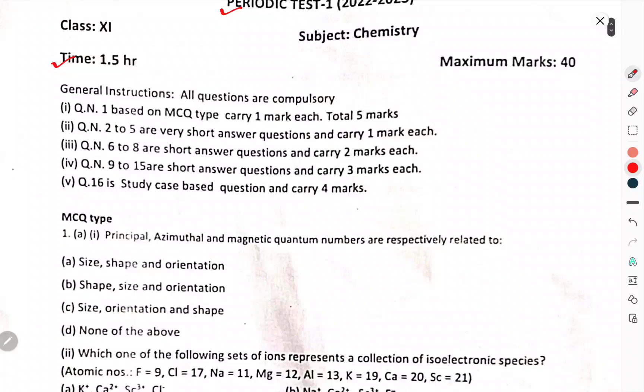General instructions: all questions are compulsory. Question number 1, based on MCQ, carries 1 mark each, total 5 marks. Question number 2 to 5 are very short answer questions, carrying 1 mark each. Question number 6 to 8 are short answer questions, carrying 2 marks each. Question number 9 to 15 are short answer questions, carrying 3 marks each. Question number 16 is study based question, carries 4 marks.